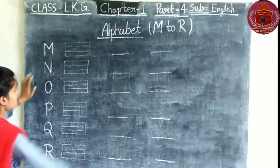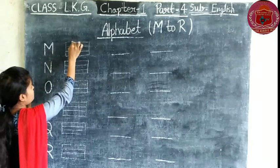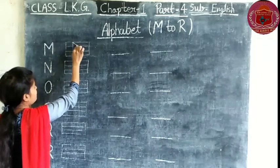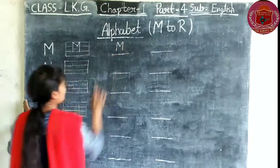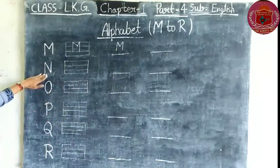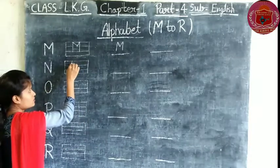How to write M? We use the upper two lines, one and two, to write M. M. And M is here also. M. And now, M. For M, we use upper two lines.